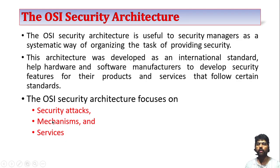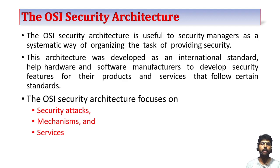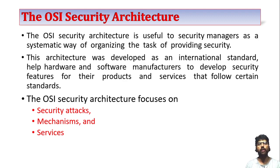Now that you understand these concepts, we can easily explain the OSI security architecture. The first component is security attack. What is the meaning of security attack? Any action that compromises the security of information owned by an organization — if any third person uses our loopholes or vulnerabilities and destroys, modifies, or uses our data, that is called an attack. They are misusing our data — that is called an attack.